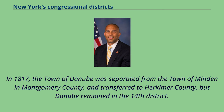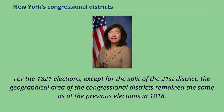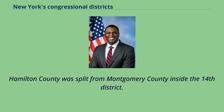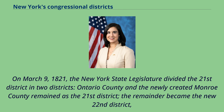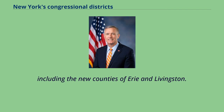In 1817, the town of Danube was separated from the town of Minden in Montgomery County and transferred to Herkimer County, but Danube remained in the 14th district. For the 1821 elections, except for the split of the 21st district, the geographical area of the congressional districts remained the same as at the previous elections in 1818. Five new counties had been created. Hamilton County was split from Montgomery County inside the 14th district. Oswego County was created from parts of Oneida and Onondaga counties, but the parts remained in their previous congressional districts. On March 9, 1821, the New York State Legislature divided the 21st district into two districts: Ontario County and the newly created Monroe County remained as the 21st district, the remainder became the new 22nd district, including the new counties of Erie and Livingston.